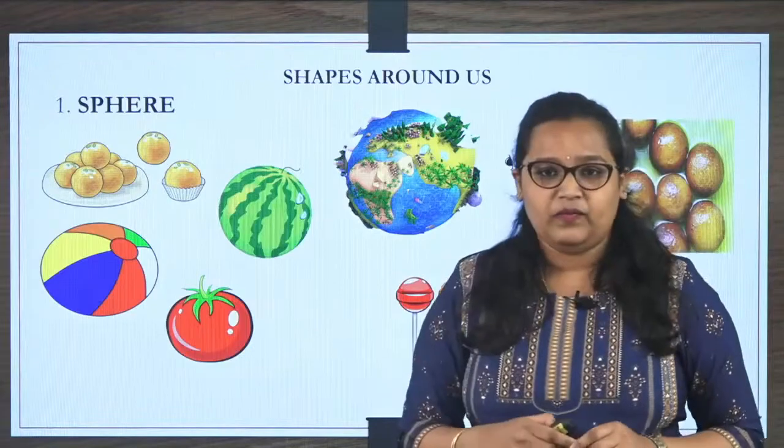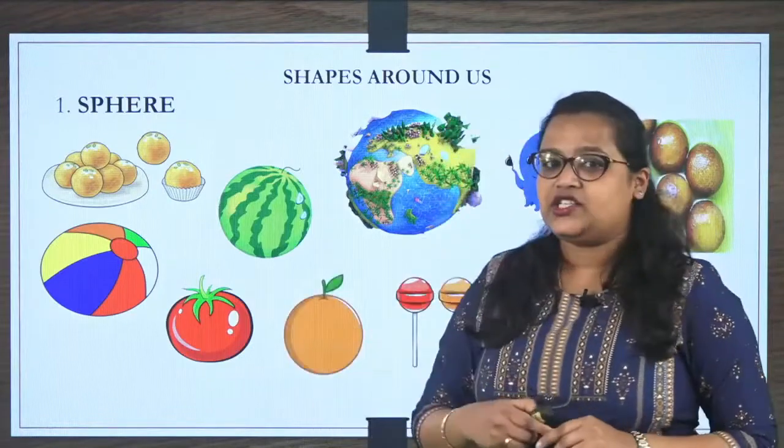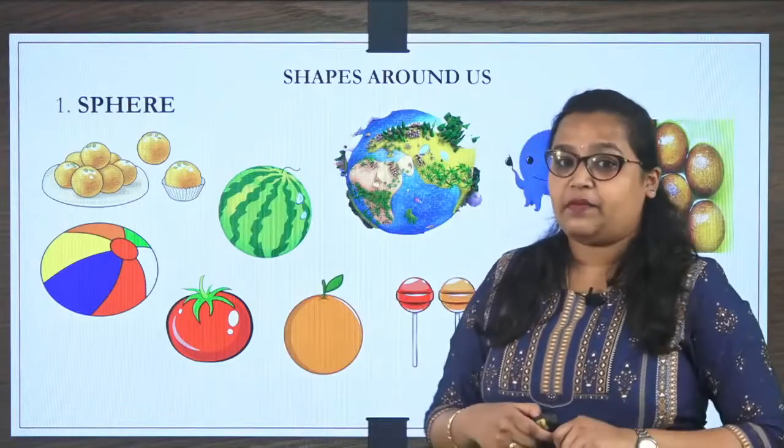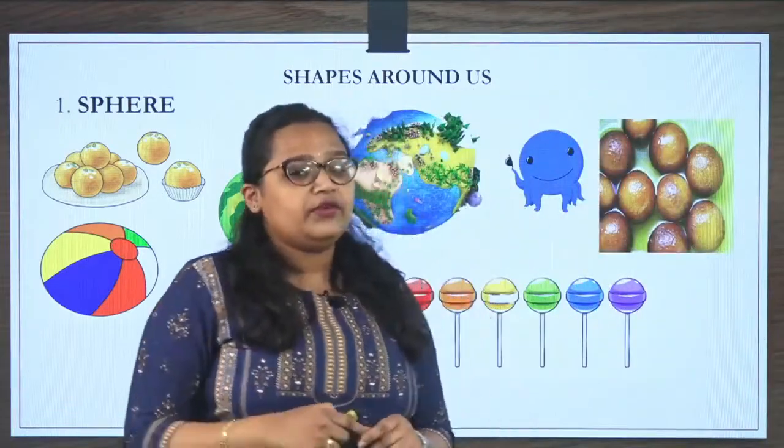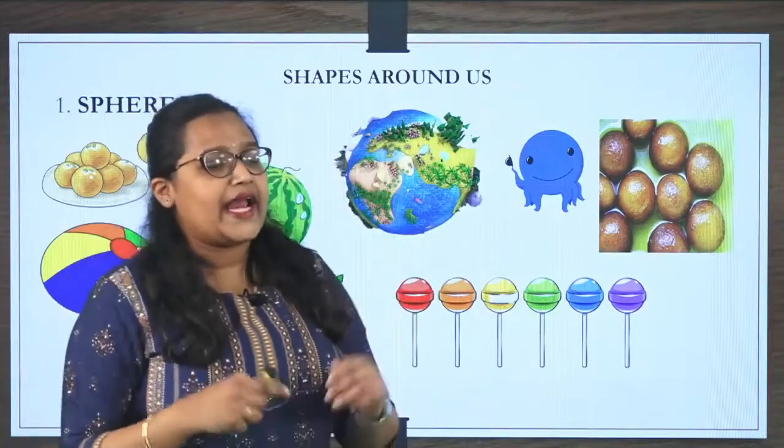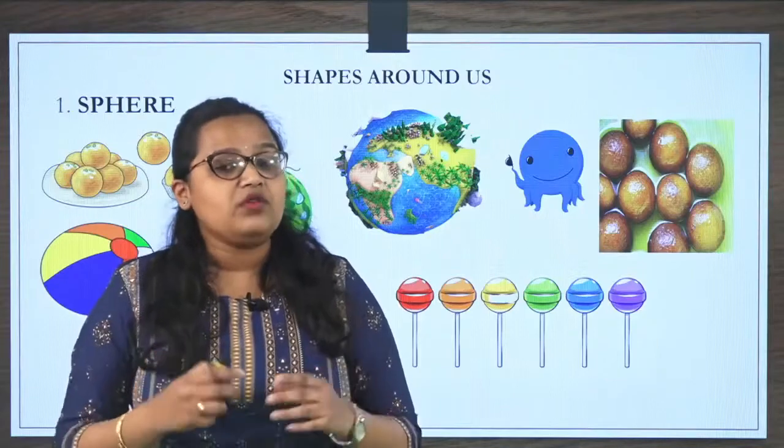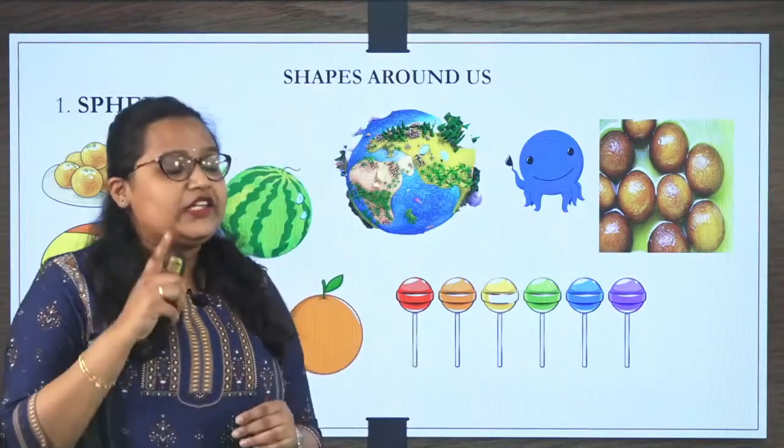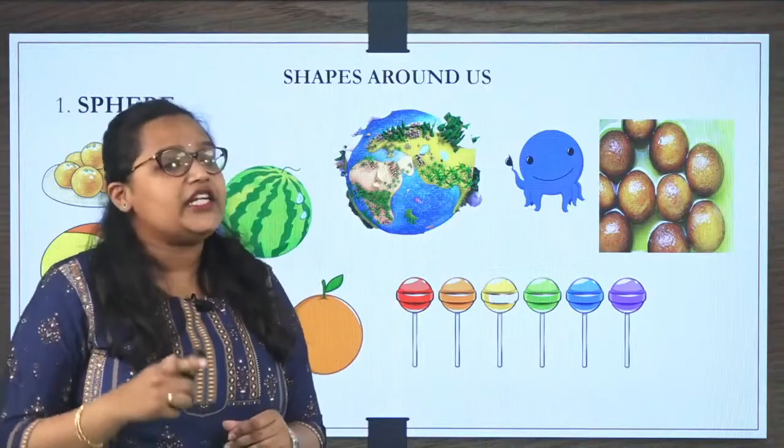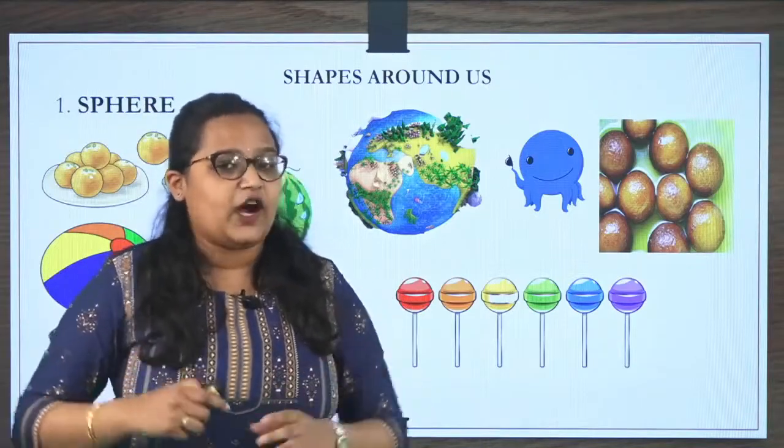Next, tomato. Tomato is in round shape. Next, orange. Orange is in round shape. So I have given few examples. What you have to do? You have to go and see in your kitchen, in your house, so many round shapes you will be getting. I hope you will go and do this. Or else you can take your parents' help or elders' help to find out this.